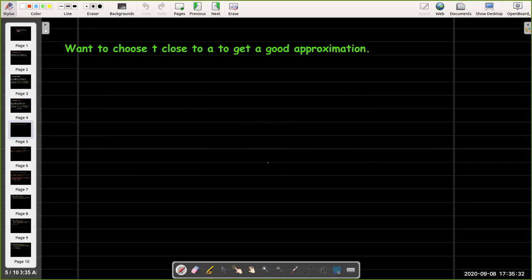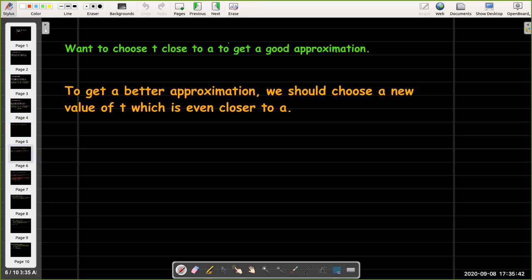Now if we wanted to get a pretty good approximation, we'd have to choose our value of t close to a. And if we wanted a better approximation, we would choose another value of t which is even closer to a.